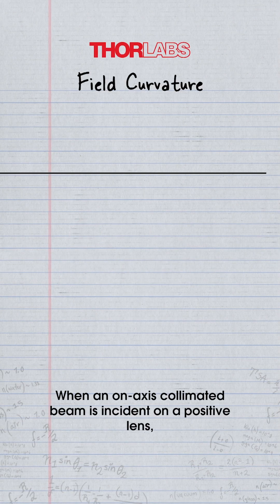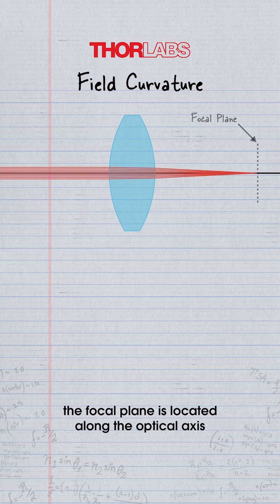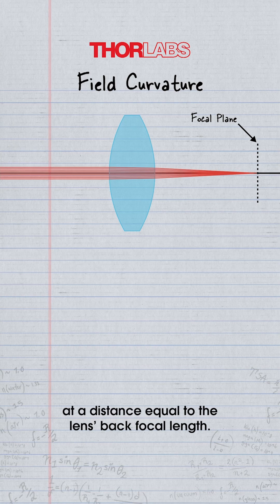When an on-axis collimated beam is incident on a positive lens, the focal plane is located along the optical axis at a distance equal to the lens back focal length.